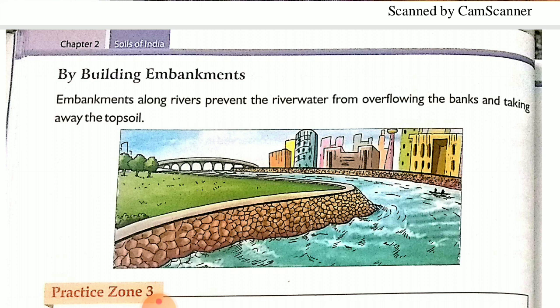Next is by building embankments. Embankments are wall-type structures built with stones on the edges or banks of rivers, as seen in this picture. They are built to prevent the river water from overflowing the banks — so that when river water overflows, the water does not flow outward and take away the topsoil with it.